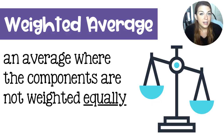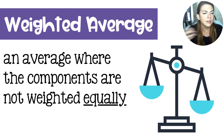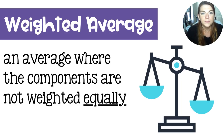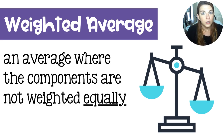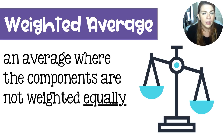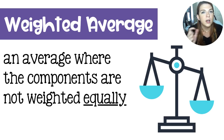A weighted average is an average where your components are not weighted equally. In a GPA, an honors or AP class may be worth more than your standard grade-level classes — that's an example of a weighted average. A weighted average would also be calculating your scores where tests are worth more than homework. If your tests are worth 50% of your overall chemistry score but your homework is only worth 10%, the tests have five times more of a hold on your overall average.